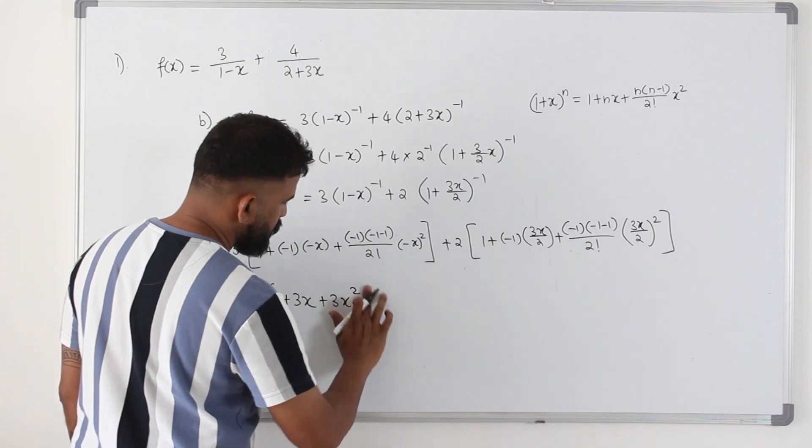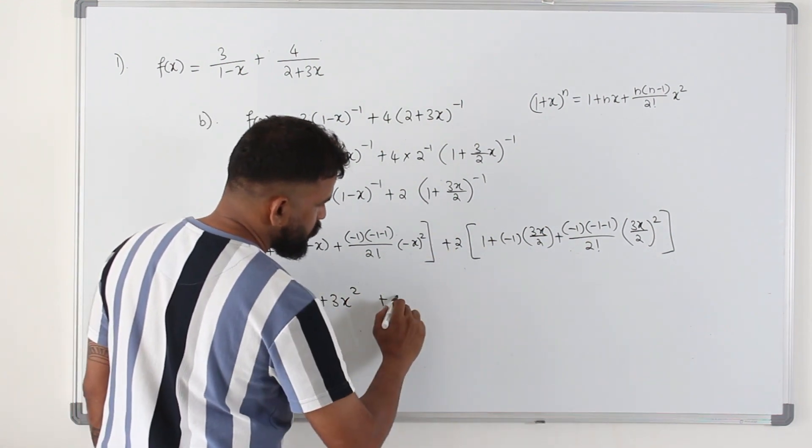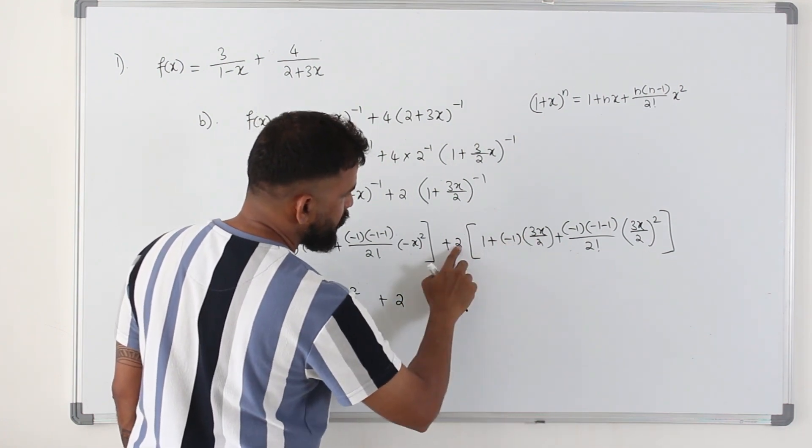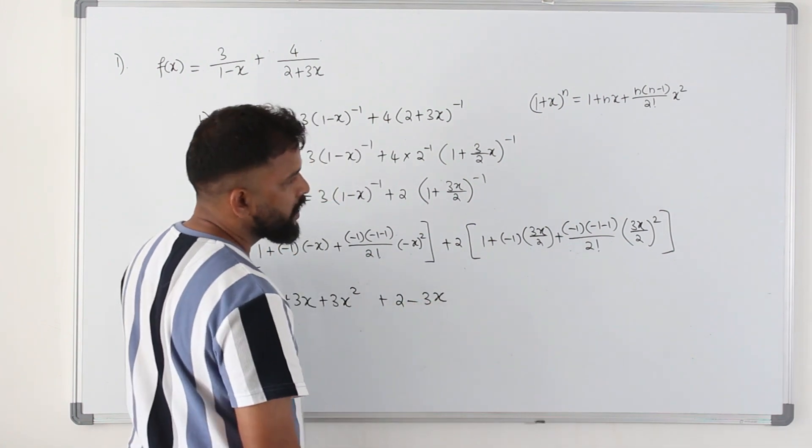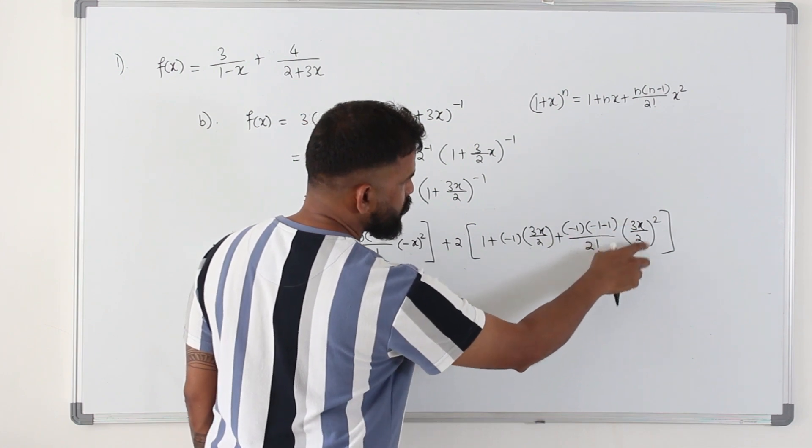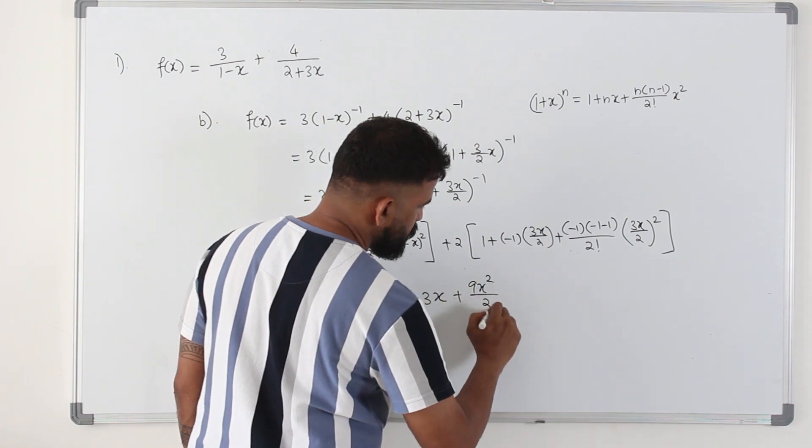Here you will get 2. You will need a bracket here actually. 2 times 1 is 2. This becomes negative 3x. When you multiply by 2, the 2 will be cancelled. You will get negative 3x. Here it's 2, the 2 will be cancelled. You will get 9x square over 4. Multiply by 2, you will get 9x square over 2.